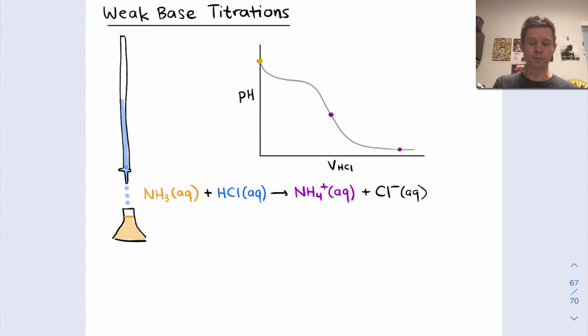In fact, if you flipped this curve over by plotting the pOH as a function of the volume of HCl added, you'd get a curve that looks almost identical to a weak acid titration curve. We're going to look at this titration curve and the key regions and points on the curve in the remainder of this video.